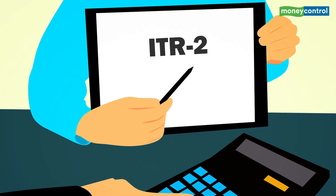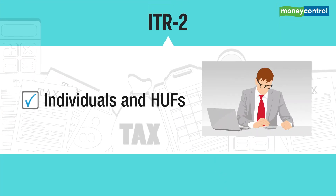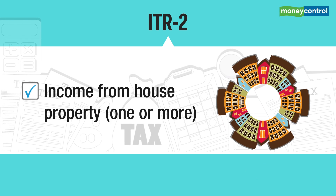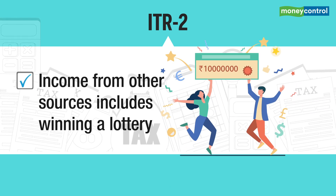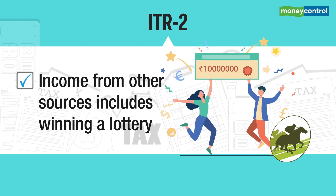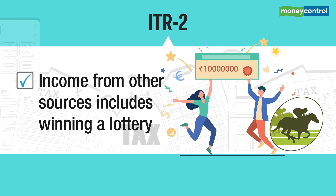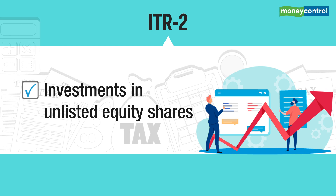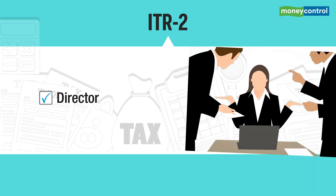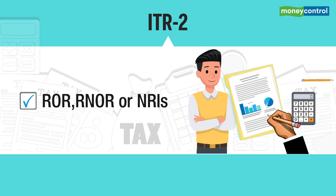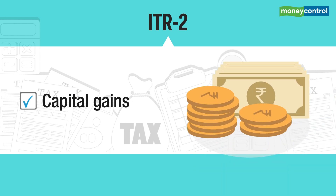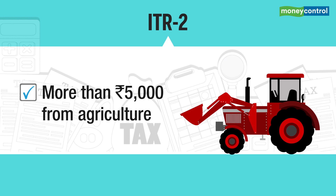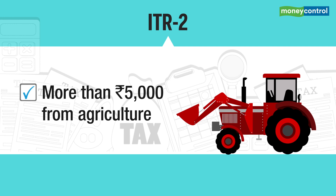ITR-2 is used as an extension of ITR-1. The ITR-2 form can be used by individuals and HUFs who have income from salary or pension even if it exceeds Rs 50 lakh, income from one or more house properties, income from other sources including winning a lottery, owning and maintaining a racehorse, or income taxable at special rates. Assessees with investments in unlisted equity shares, directors in a company, resident and ordinarily resident, resident but not ordinarily resident, and non-resident Indians can use ITR-2. It also applies to those with capital gains, foreign assets or entity income, or agricultural income exceeding Rs 5,000.